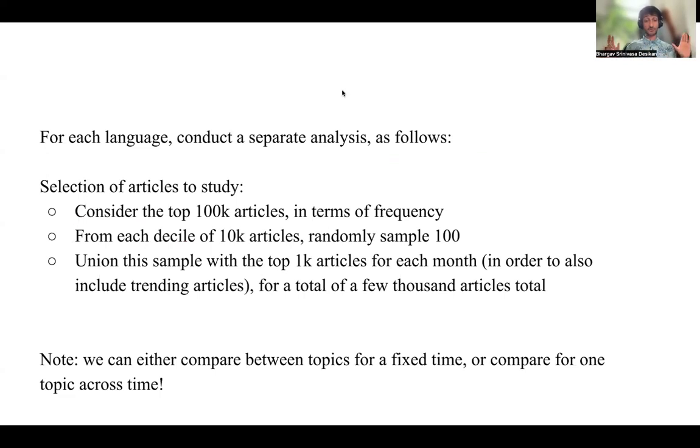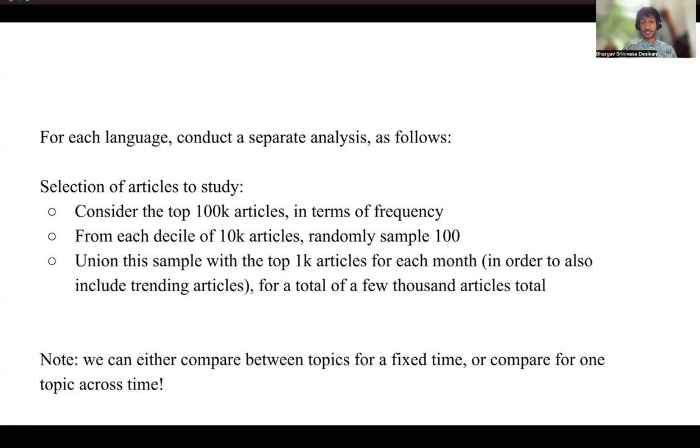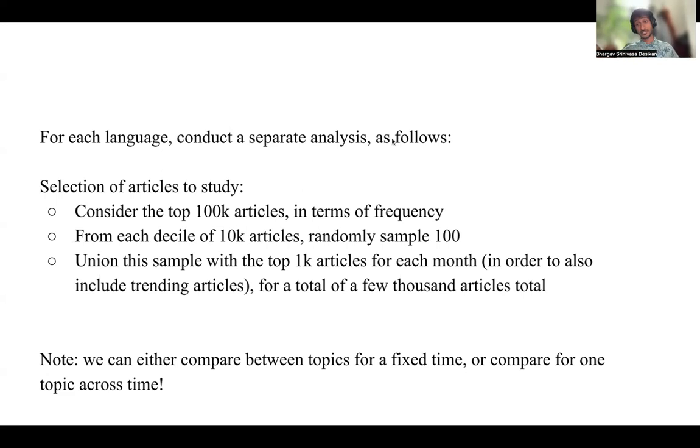And what we do is for each language, we conduct a separate analysis where we consider the top 100k articles and we sample in such a way where we get a total of 10,000 articles. And for these 10,000 articles, we can basically calculate the beta values using these clickstream and the trends. Now, again, note that we can only compare between topics for a fixed time or compare for one topic across time.